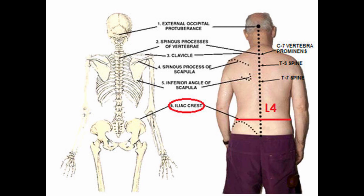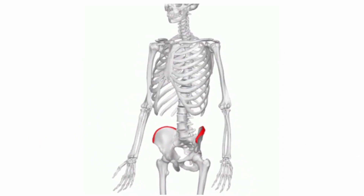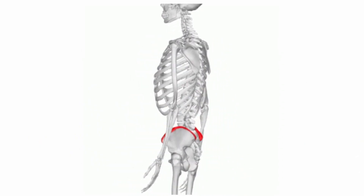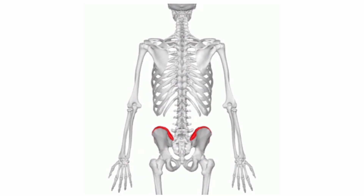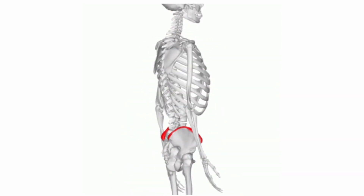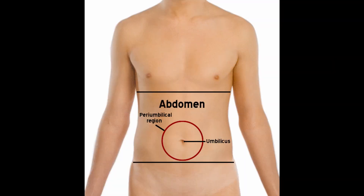Our next landmark is the iliac crest, or the crest of the ilium. It is the superior border of the wing of the ilium and the superior lateral margin of the greater pelvis. Our next landmark is the umbilicus, which is sometimes a hollow or sometimes a raised area of the abdomen.